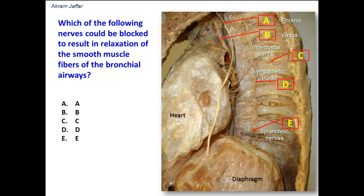It could be either sympathetic from the sympathetic trunk, or parasympathetic from the vagus. If the nerve is blocked, this will result in relaxation of the smooth muscle. So it means which nerve causes spasm or contraction of the smooth muscle — and these are parasympathetic fibers. If the parasympathetic fibers are blocked, then this will result in relaxation of the smooth muscle fibers.